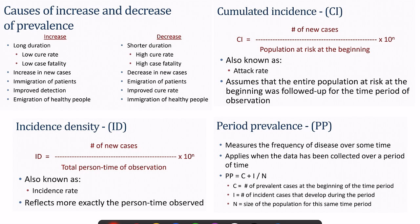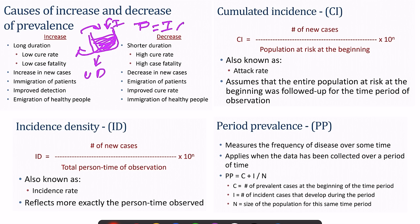Moving to incidence and prevalence. The relationship is: prevalence equals incidence multiplied by duration. Prevalence is the indicator used in chronic disease; incidence is used in acute disease. Causes of increase in prevalence include longer duration of disease due to low cure rate or low case fatality rate, increase in new cases, immigration of patients, improved detection, and immigration of healthy people. Decrease in prevalence is the opposite — shorter duration, high cure rate, high case fatality rate, decrease in new cases, emigration of patients, and immigration of healthy people.